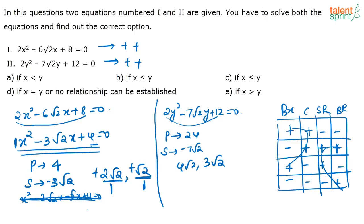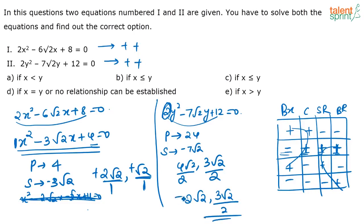Both roots are positive. Since the x² term has coefficient 2, divide the answer by 2: the roots are 2√2 and 3√2/2. Comparing the roots of both equations — x gives 2√2 and √2, y gives 2√2 and 3√2/2 — you get different comparison results depending on which roots you compare, so no relationship can be established.